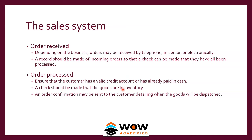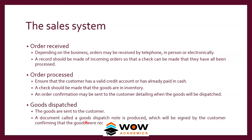We should also check with the warehouse whether the goods are available — we cannot promise dispatch without having the goods in hand. If goods are available, an order confirmation may be sent to the customer detailing when the goods will be dispatched. Once the customer is confirmed as good or has paid cash and goods are available, the goods are dispatched. A document called a Goods Dispatch Note (GDN) is produced, which is signed by the customer confirming the goods were received in good condition.